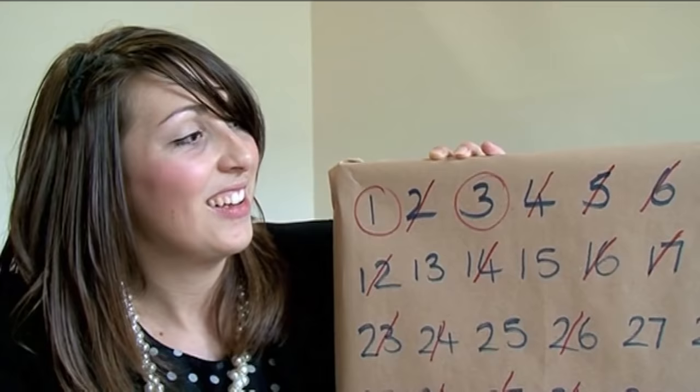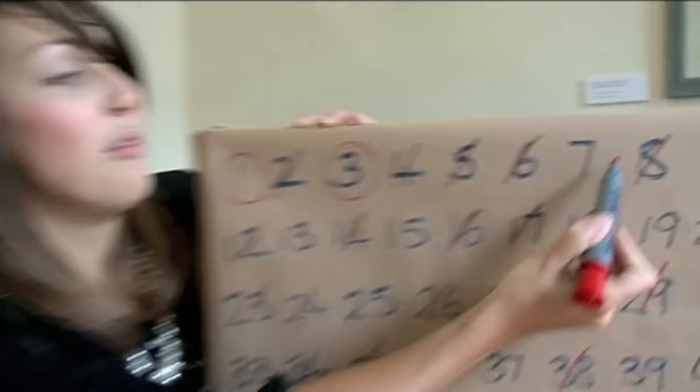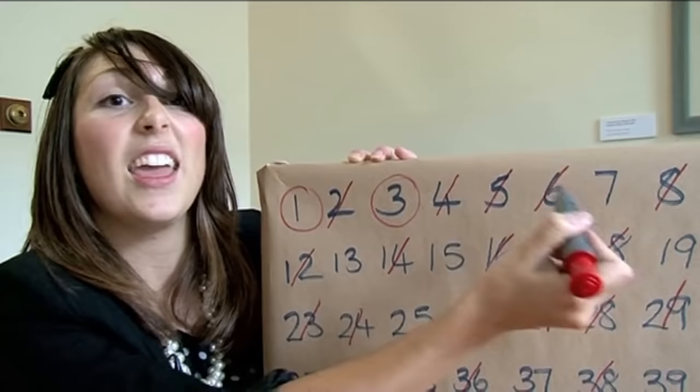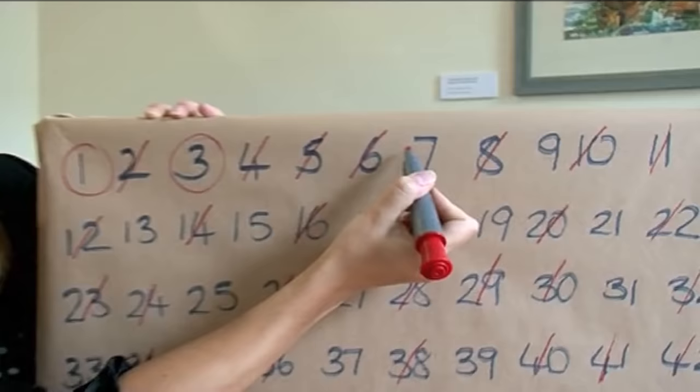The next number I need to look at is number 7. Now, number 7 tells me how many numbers I need to get rid of. I eliminate every seventh number. So we start from the beginning: 1, 2, 3, 4, 5, 6, 7.